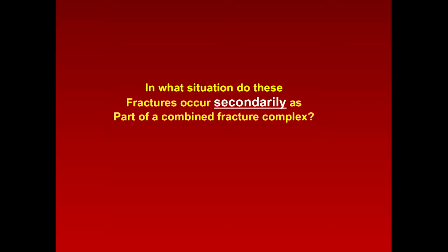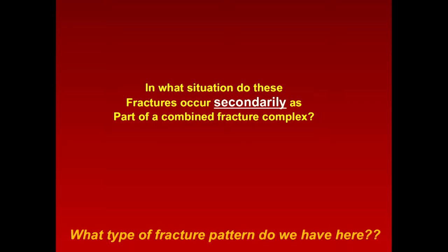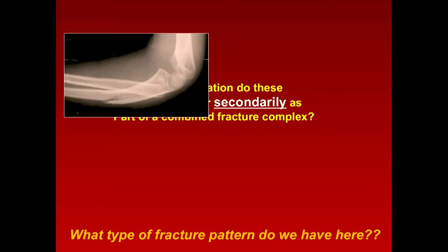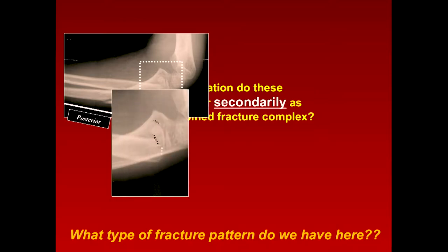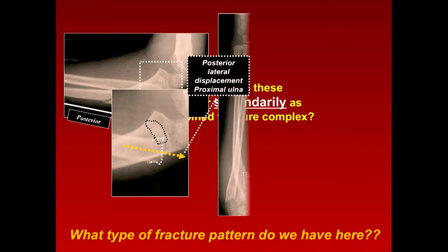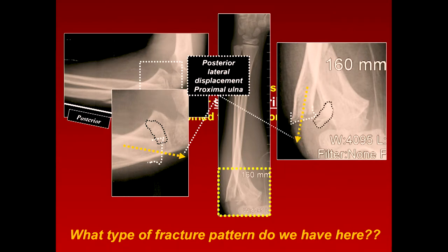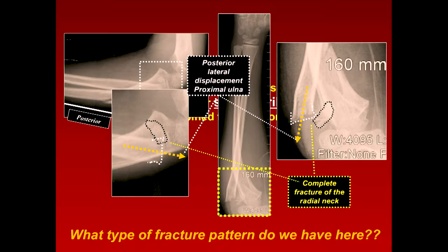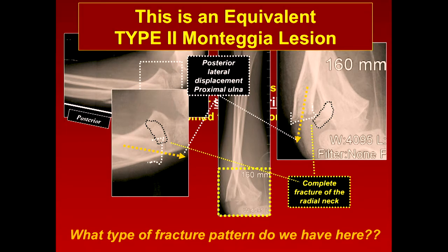Some fractures occur secondarily as part of a combined fracture complex. Here's an example - you have posterior angulation of the ulna and a complete fracture of the radial neck, with posterior lateral displacement of the proximal ulna. This is a type II Monteggia lesion. Remember when we talked about Monteggia fractures - type IIs often involve fractures of the radial neck in addition to a fracture of the olecranon. People will focus on the radial neck fracture, but the most important thing is the angulation of the proximal ulna.